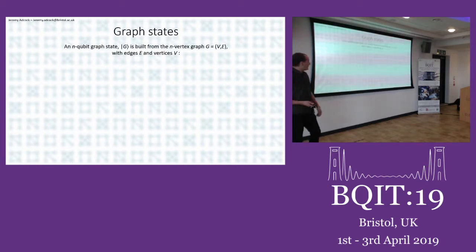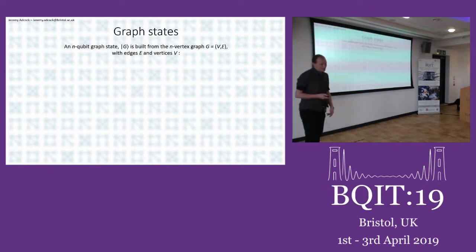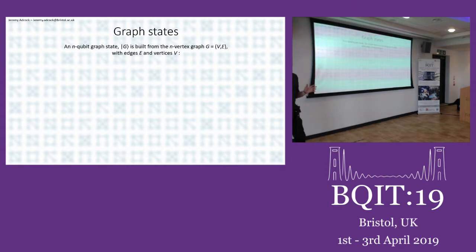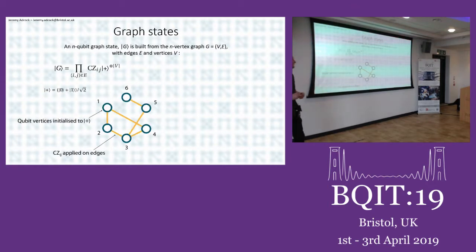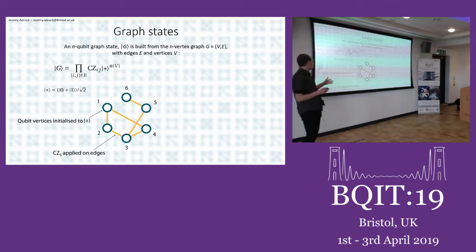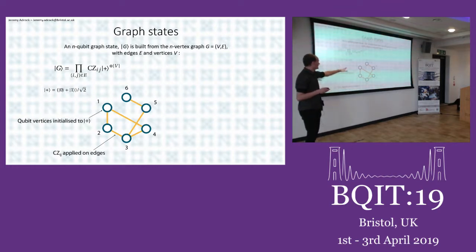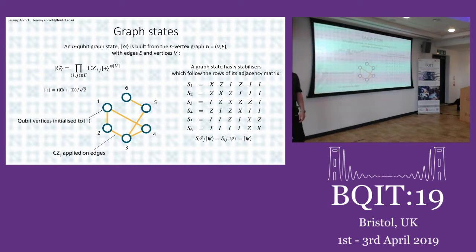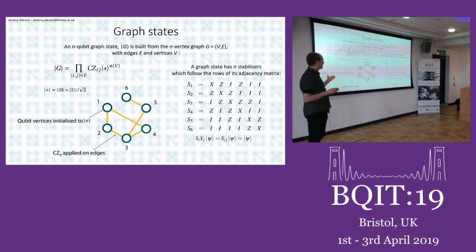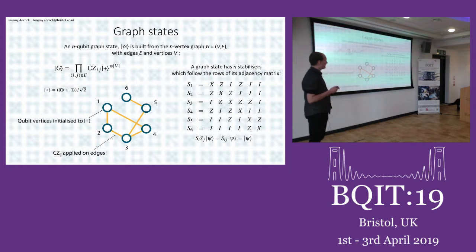An n-qubit graph state corresponds to an n-vertex graph where you initialize those n qubits to the plus state and do controlled-Z operations corresponding to the edges on that graph. Graph states are stabilizer states, which means that for an n-qubit graph state they have n stabilizer generators which roughly follow the adjacency matrix of the graph.